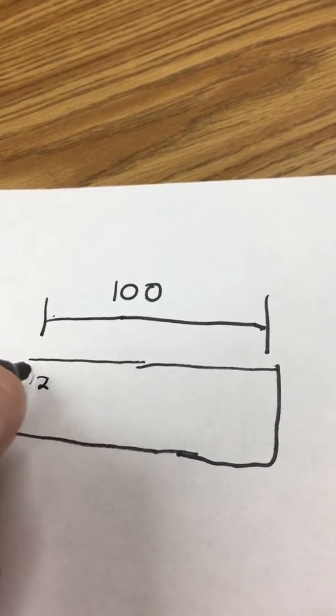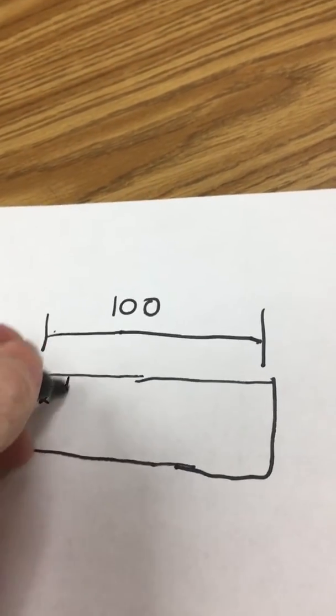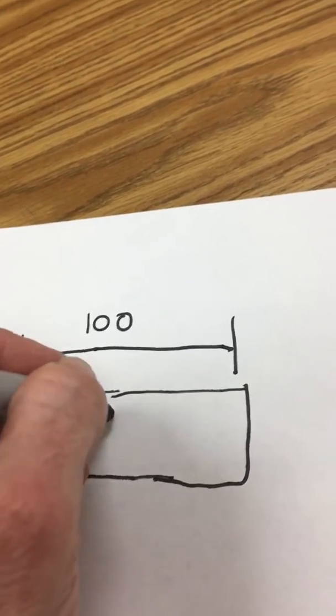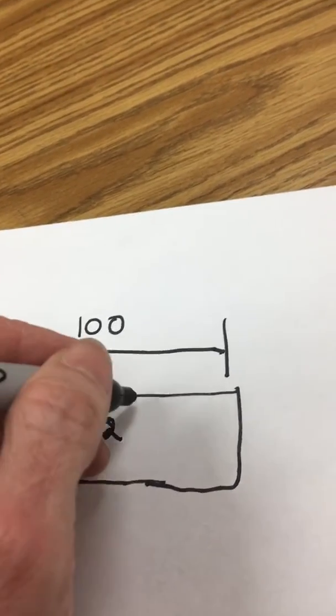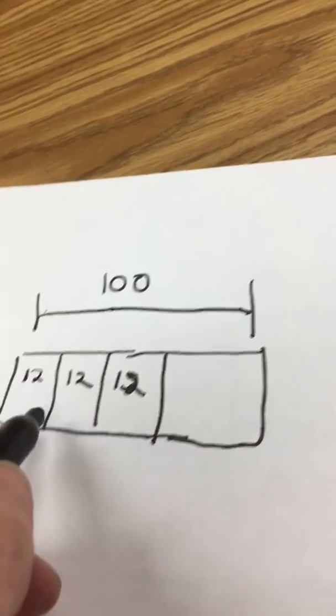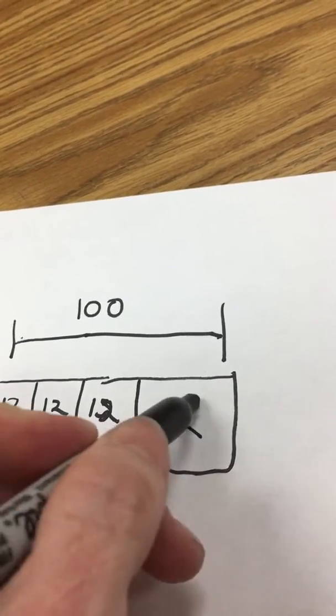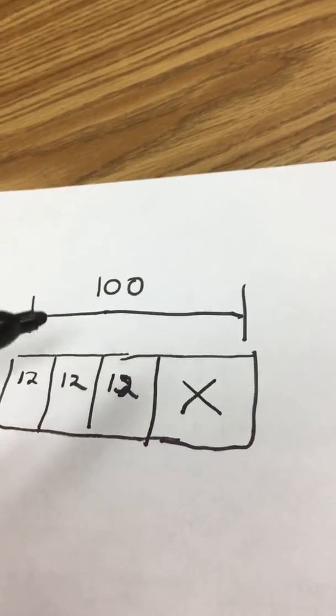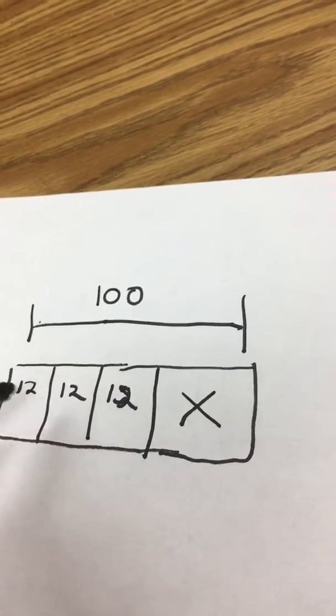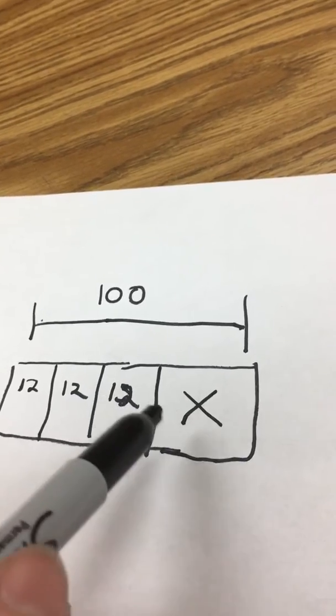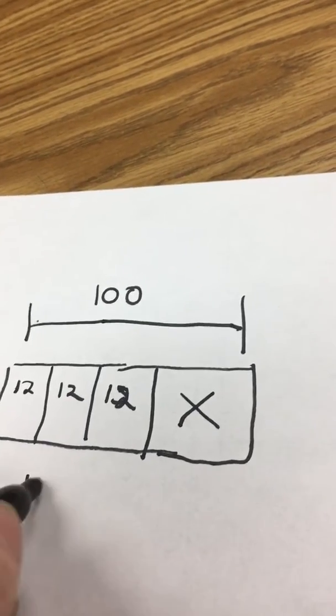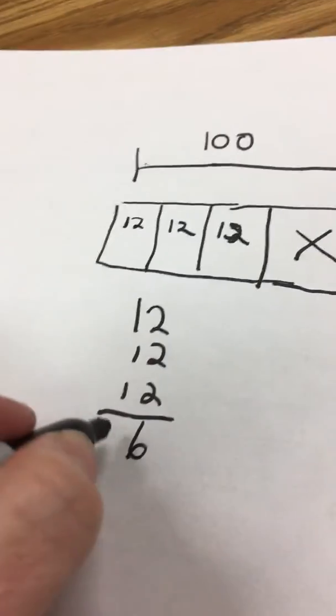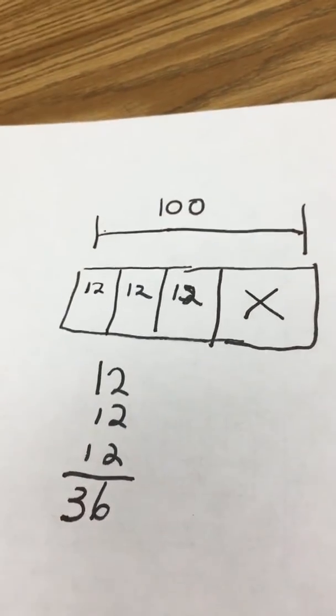We know on the first day she swam 12 laps. The second day she swam 12 laps. The third day she swam 12 laps. And then we have to figure out how many laps she needs to swim to get to 100. You can do this a couple of different ways. You can take 12 times 3 or else you can add up 12 three times. When I add up 12 three times, that gives me 36.